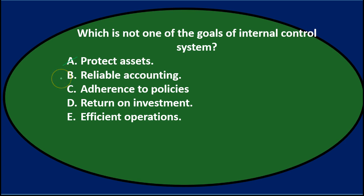B. Reliable accounting — reliable record keeping might be more what we would think, but it sounds like a good goal so we'll leave that for now. C. Adherence to policies — an internal control wants to help us adhere to policies, so that is an internal control system goal. We'll say that's not the answer because it's true.